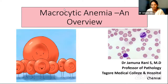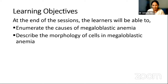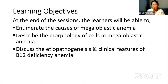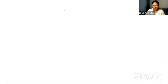Good evening everyone. I would like to thank Medusen and Dr. Raghunandan for arranging this session. The topic for today's discussion is macrocytic anemia: an overview. The objectives are that learners will be able to enumerate the causes of megaloblastic anemia, describe the morphology of cells, discuss the etiopathogenesis and clinical features of B12 deficiency anemia, and similarly of folate deficiency anemia.